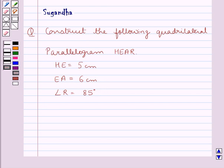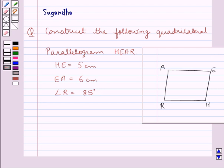Before drawing the actual figure, first let's see the rough sketch of the parallelogram HEAR where HE is 5 cm, EA is 6 cm and angle R is given to be 85 degrees.